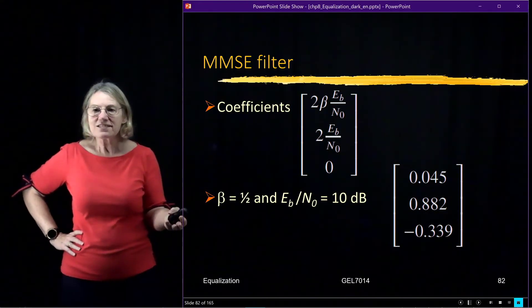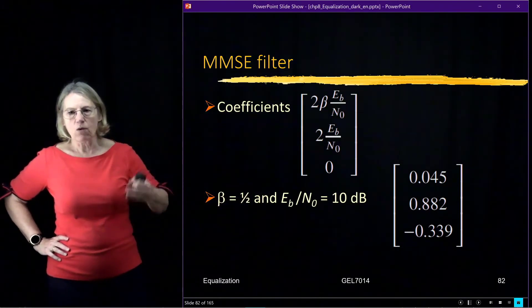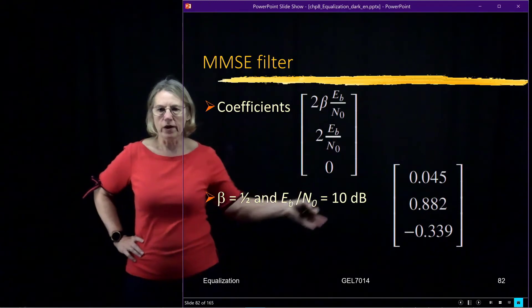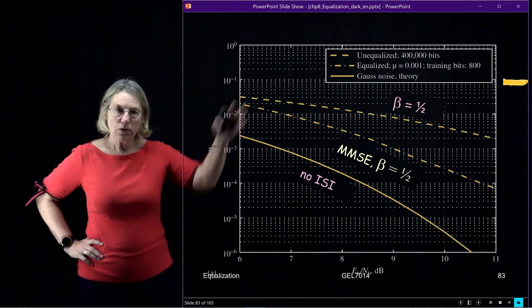So based on this I could sweep through EB over N0 and find out what is the best filter at each one of these points and plot what is the performance of that. And so that's what we see here.